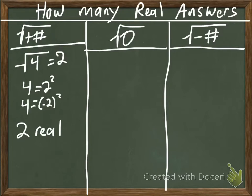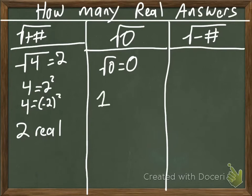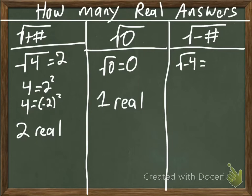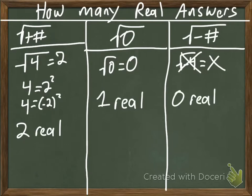Now, the square root of 0: plug it into a calculator and you get 0. Zero is that weird number — it's the only answer you get, so there is one real answer. For the square root of a negative number, say the square root of negative 4, you'd get a syntax error. You cannot take the square root of a negative number — there are zero real answers. Remember that. Positive → two real answers; zero → one real answer; negative → no real answers.